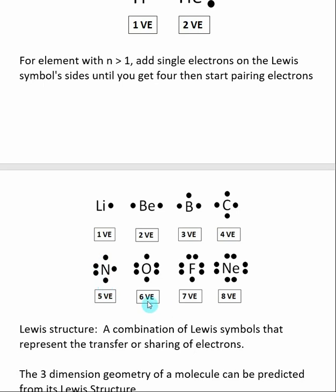As we continue on, oxygen has six, so now we only have two unpaired electrons. Fluorine has seven, so it only has one unpaired electron. And neon has eight, so there are no unpaired electrons. We're going to find out pretty quick that it's those unpaired electrons that undergo bonding. This makes sense that neon has no unpaired electrons, so it doesn't want to bond.